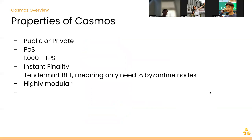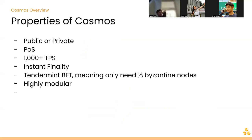Something great about Cosmos is that using its ABCI — Application Blockchain Interface — you can interact in most languages, providing more flexibility for developers. You can have public or private chains, typically proof of stake, with upwards of 1,000 transactions per second, instant finality, it uses Tendermint, you only need one-third or 15 nodes, and it is highly modular.